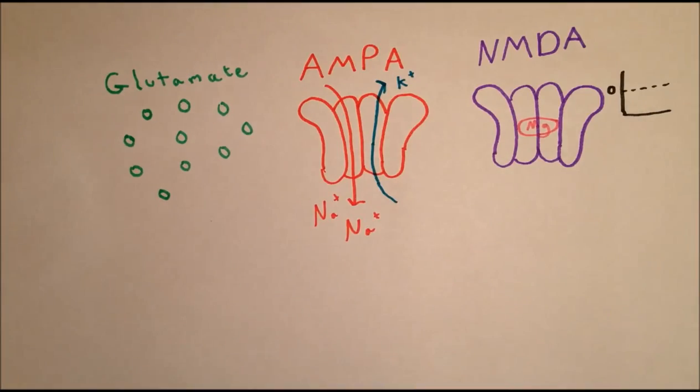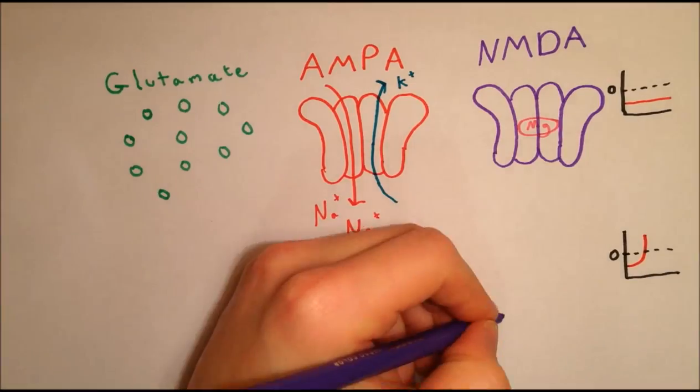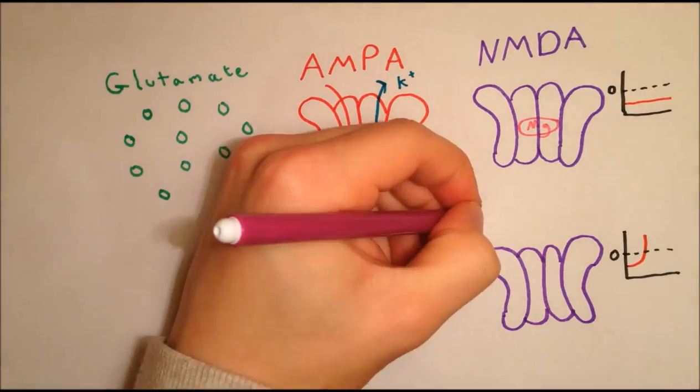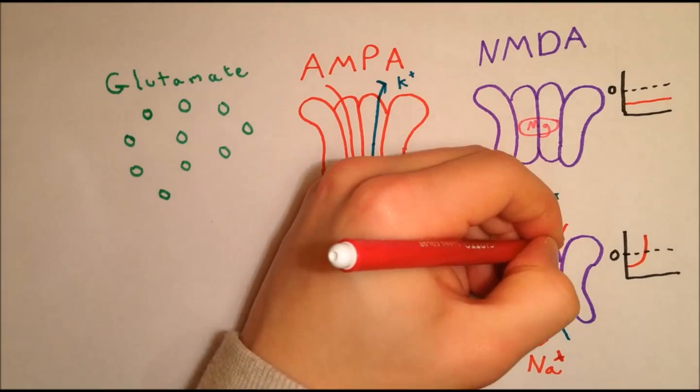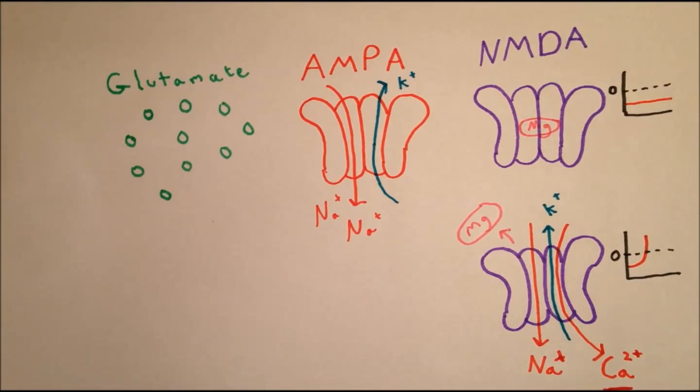The NMDA receptors, in contrast, are blocked by magnesium at negative voltages, and therefore do not significantly contribute to postsynaptic depolarization of the cell. However, once the cell is depolarized, the magnesium is displaced, and ions then flow through the NMDA receptor. Importantly, the NMDA receptor also allows calcium to flow through. It is the nature of this calcium current which causes spike-timing-dependent plasticity.